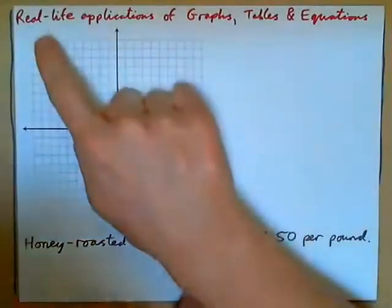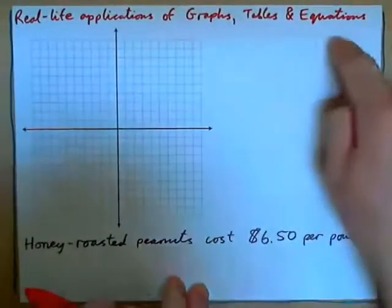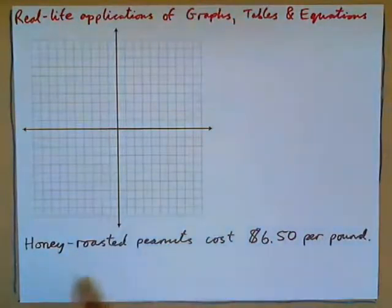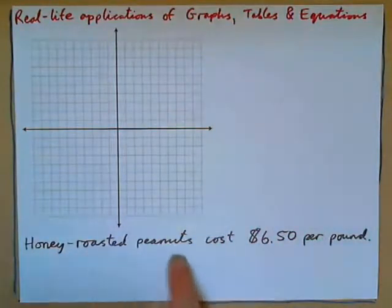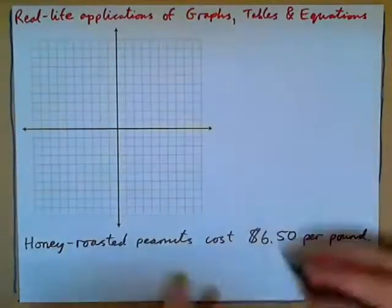Let's take a look at real life applications of graphs, tables, and equations. Have a look at this situation: honey roasted peanuts cost $6.50 per pound.